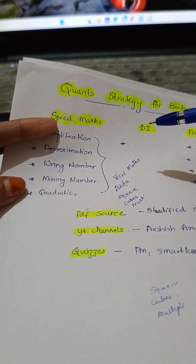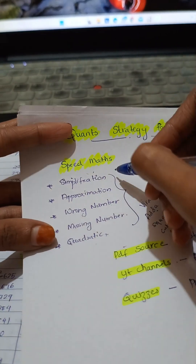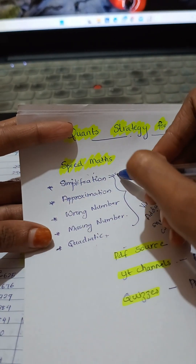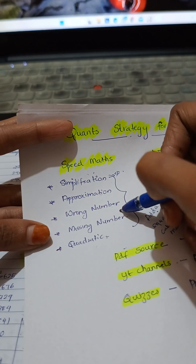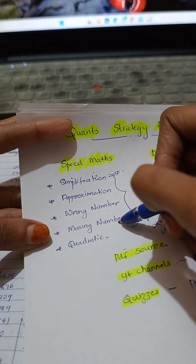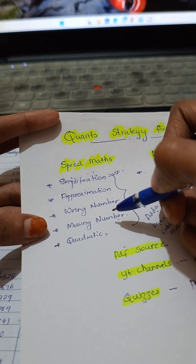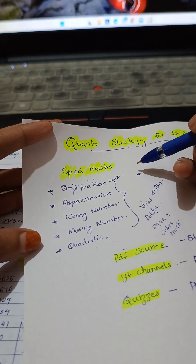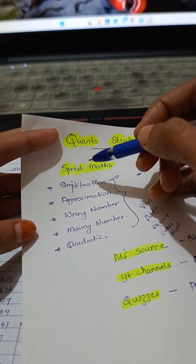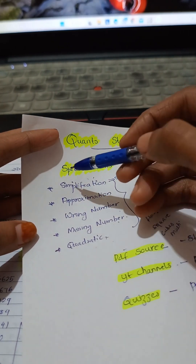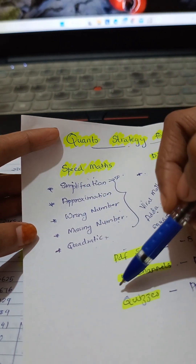For improving speed daily, you should do 50 simplification, 50 approximation, 50 wrong number, 50 missing number, or quadratic if you're a beginner. If you are a repeater, then you can do 10 or 20 of each of these pattern questions.